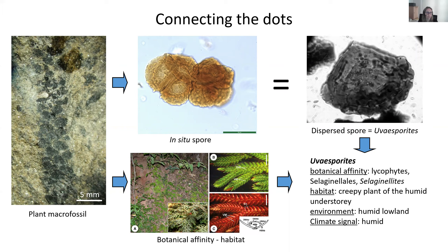Going one step further, we can look into the sediments and find the corresponding dispersed spores — in this case uvosporitis — and then link uvosporitis to the plant, which is a Selaginellalian plant. We can also infer the environment because we can see what type of environment that single plant was living in when we find it in situ, or compare it to extant plants with a similar habitat. In this case it's normally a creeping plant living in a humid understory, so the environment it reflects is a humid lowland environment. This directly links uvosporitis with Selaginellites, and by inference gives us the climate signal: humid.